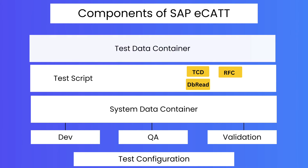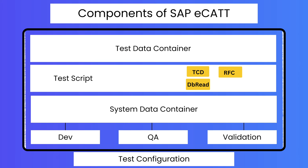Finally, we have the Test Data Container. The Test Data Container holds the data sets for your testing. For example, if you want to test a transaction, you can create different types of data sets. Using these data sets, you can execute the same script in different systems — for example, one data set for development and another for quality. To recap: in SAP eCATT we have Test Configuration, System Data Container, Test Script, and Test Data Container.